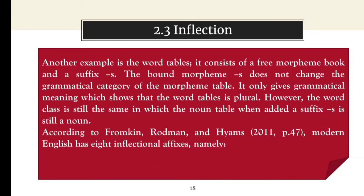Another example is the word 'tables'. It consists of a free morpheme 'table' and a suffix -s. The bound morpheme -s doesn't change the grammatical category of the morpheme 'table'. It only gives grammatical meaning which shows that the word 'tables' is plural. However, the word class is still the same — the noun 'table' when added a suffix -s is still a noun. According to Fromkin, Rothman, and Herms, modern English has eight inflectional affixes.